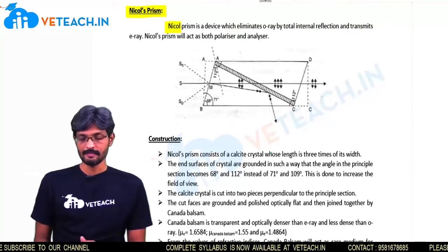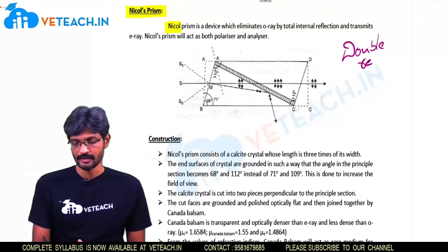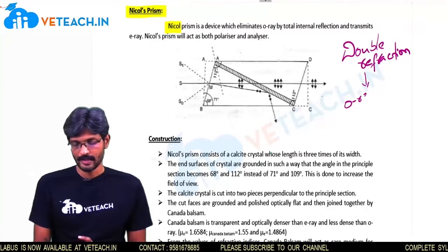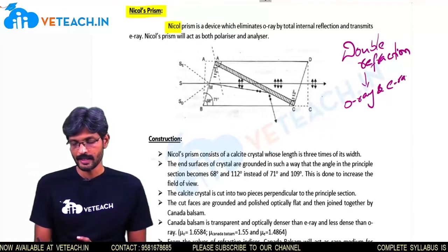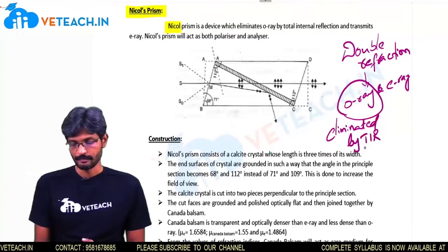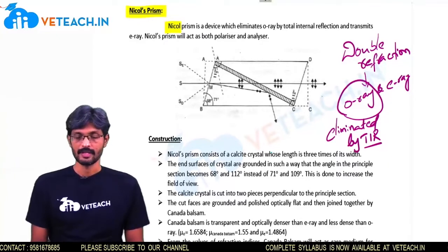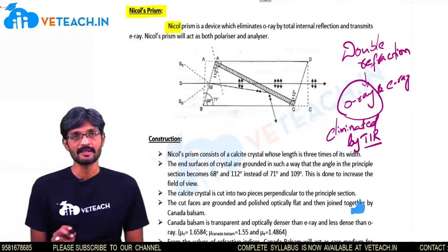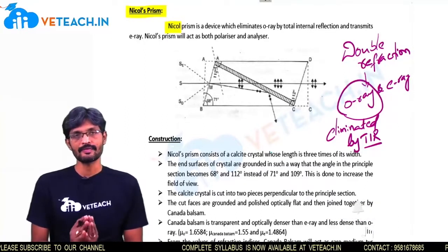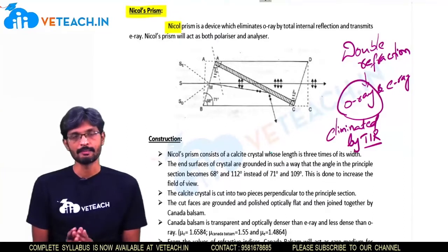In the Nicol Prism device, we use double refraction to produce plane polarized light. Due to double refraction, O-ray and E-ray are produced, and the O-ray is eliminated by total internal reflection. Why do we eliminate the O-ray? Because O-ray obeys the laws of refraction, and the velocity and refractive index of the O-ray in the crystal remains constant.